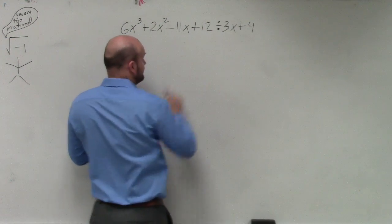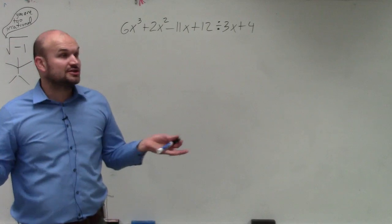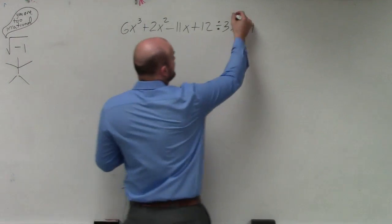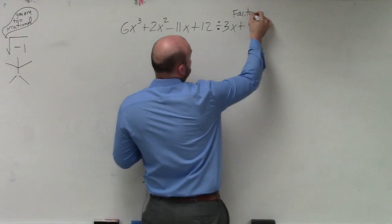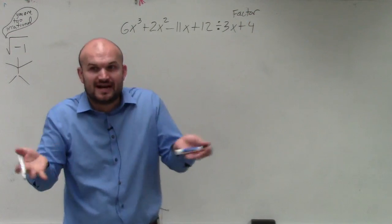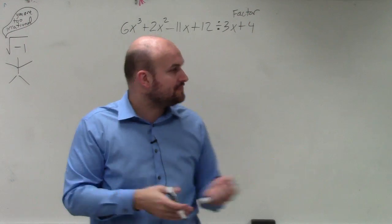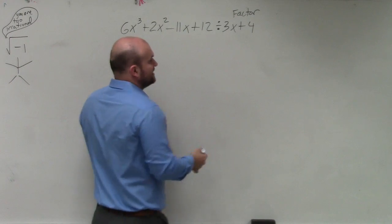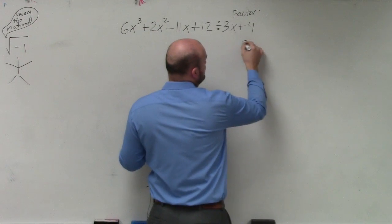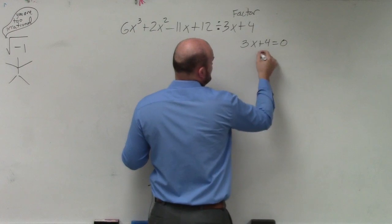They're asking you to divide using synthetic division. The first thing is, if we're using division, then this is our factor, right? Our divisor, if it has a remainder of 0, is going to be our factor. When using synthetic division though, we want to find the zero. To do that, we set 3x plus 4 equals 0.